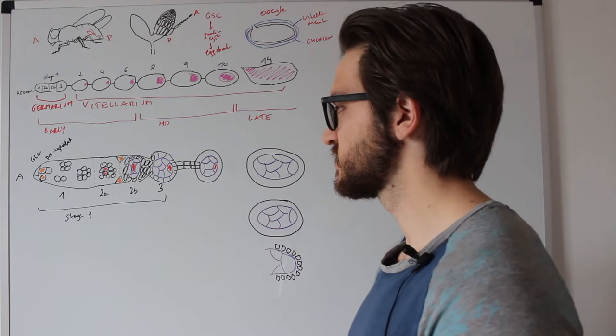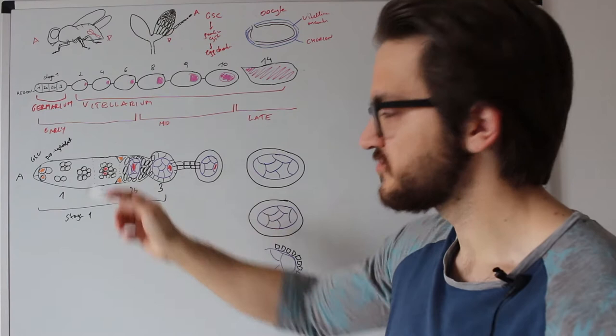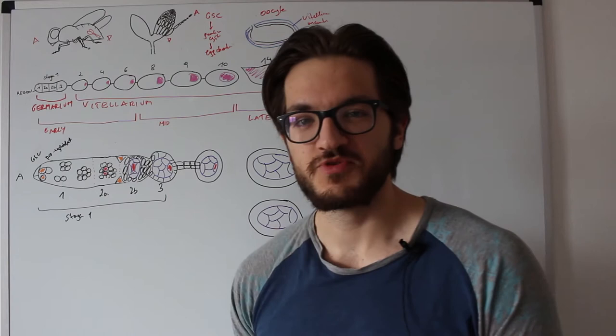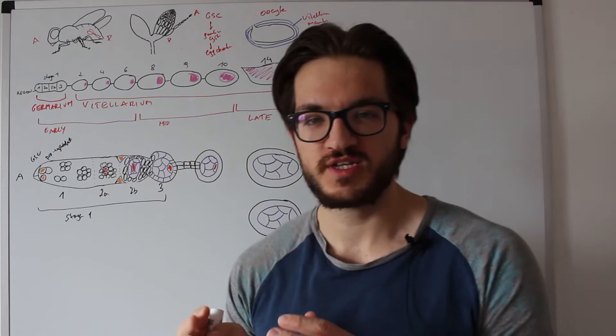The cystoblast will then divide four times mitotically: two cells, four cells, eight, and sixteen. If you count them, you might notice they don't look like eight or sixteen because I tried to draw them a little bit more in 3D, so you might imagine some cells behind these ones. But these should represent two, four, eight, and sixteen cells.